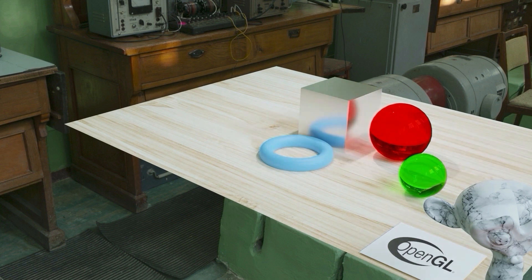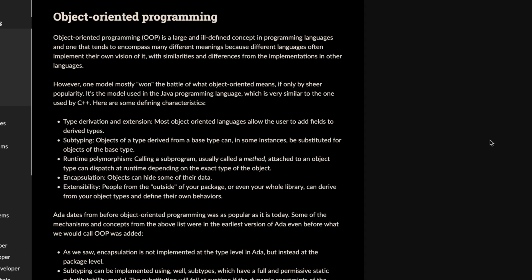So downside number one, passive aggression. I understand this is Ada Core's website. It's not the official documentation, but it's pretty official documentation. This is their write-up, Ada's write-up on object-oriented programming. First sentence: 'Object-oriented programming is a large and ill-defined concept in programming languages and one that tends to encompass many different meanings because different programming languages often implement their own version of it with similarities and differences from the implementations in other languages.' We'll try not to sound too excited about it.